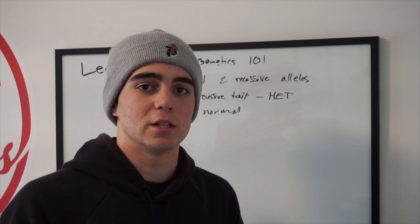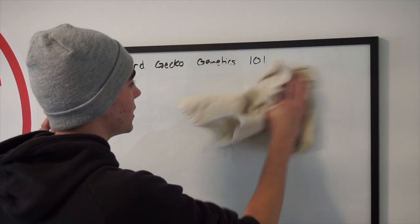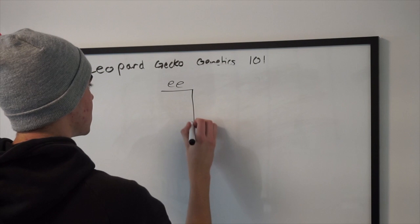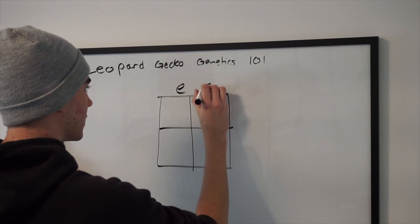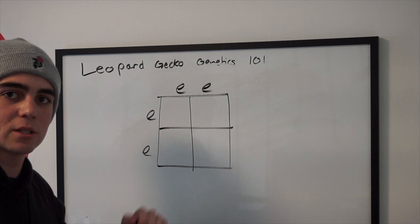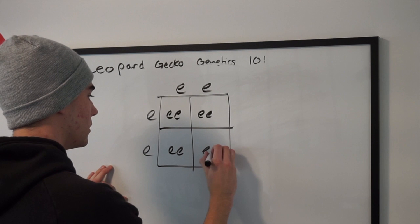You can understand what you would get out of a pairing based on the percentages. If you do some kind of recessive pairing — let's say you pair an eclipse to an eclipse — because eclipse is recessive, you'd have visual eclipse paired to visual eclipse, and both carry the two recessives. That would be the pairing.